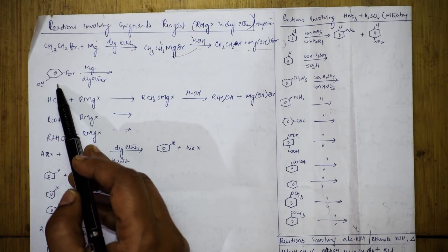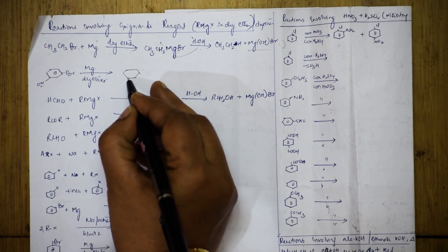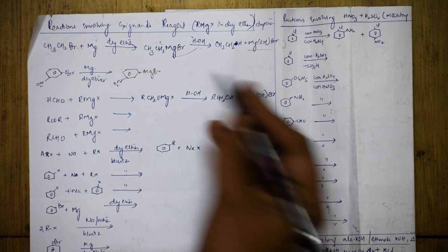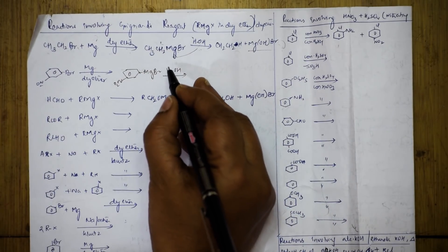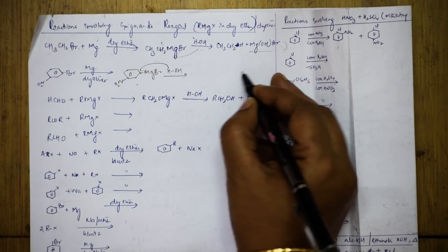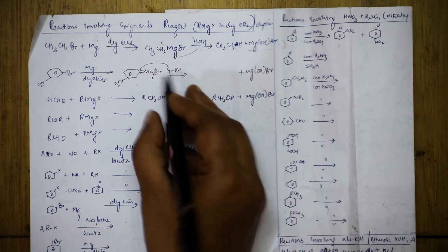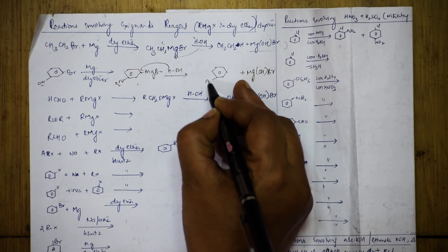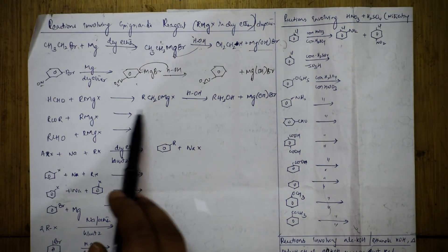Now let us try with this. In this particular reaction, MgBr goes and adds. Copy the same - NO₂ is here and you are getting MgBr. Addition reaction - as soon as you add, you are going to hydrolyze the reaction. When you hydrolyze, your H comes and adds here and you get MgOHBr.